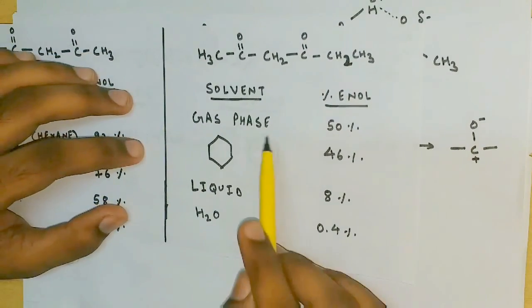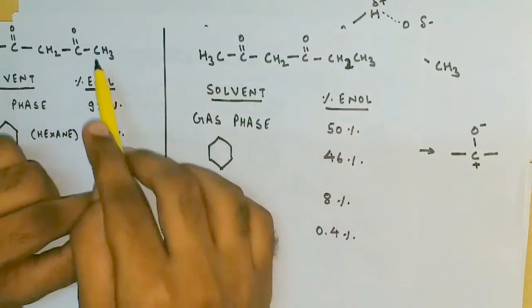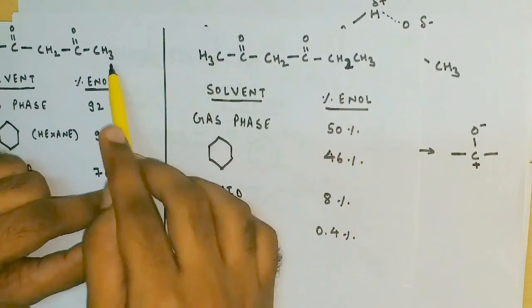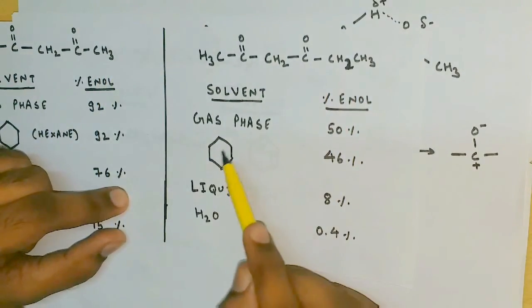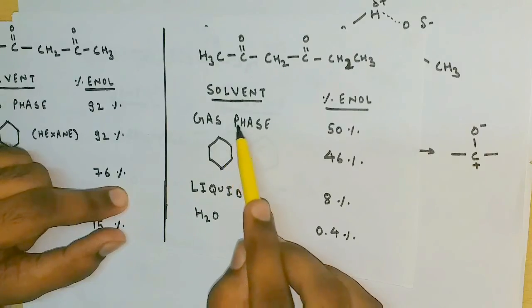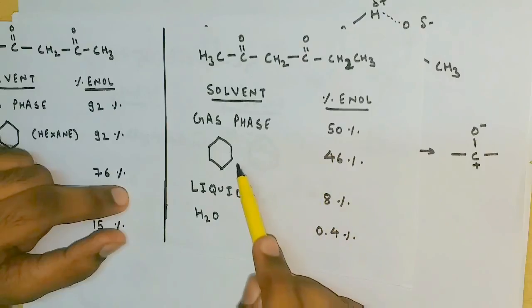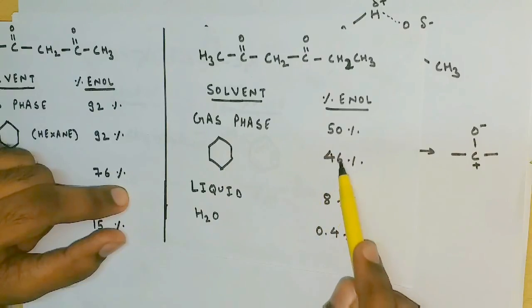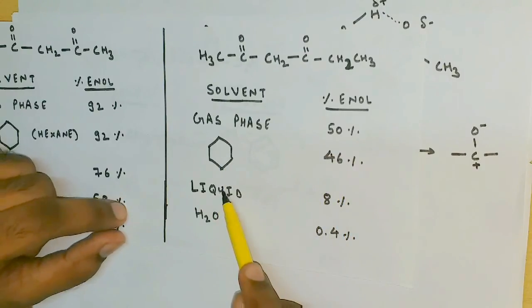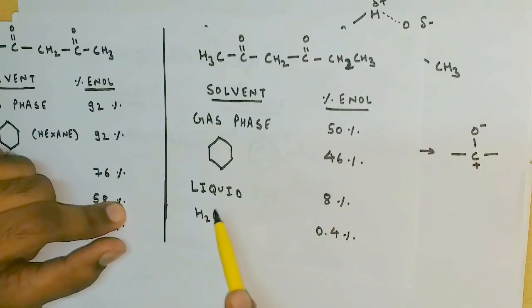In the second case, we are taking a compound which is almost similar but slightly different because it has one carbon extra. The data says in the gaseous phase it has highest enol percentage, 50 percent. In hexane it is slightly lower, in liquid it is further low.